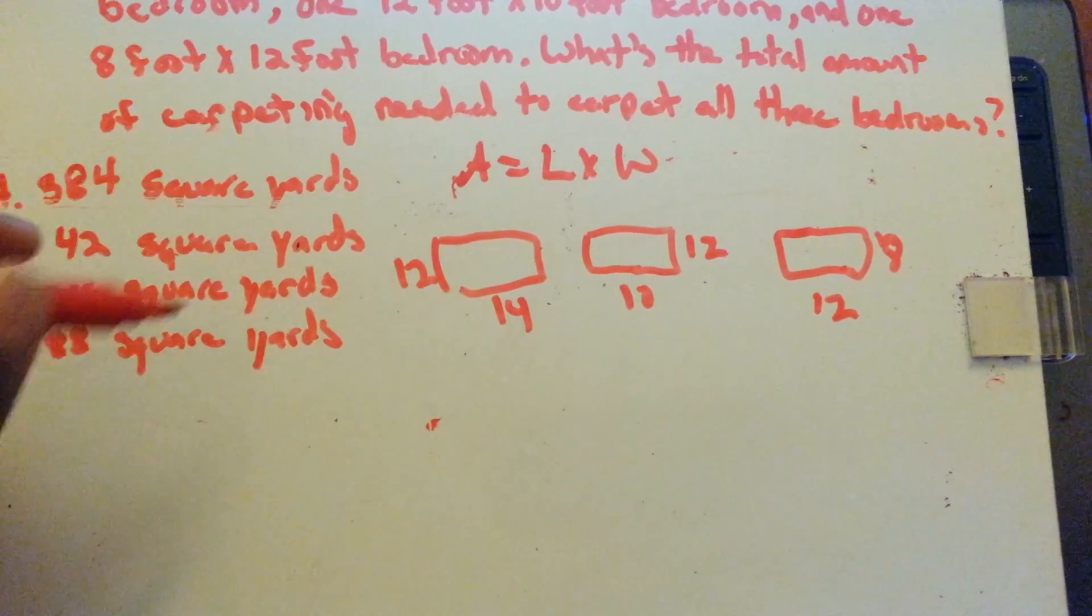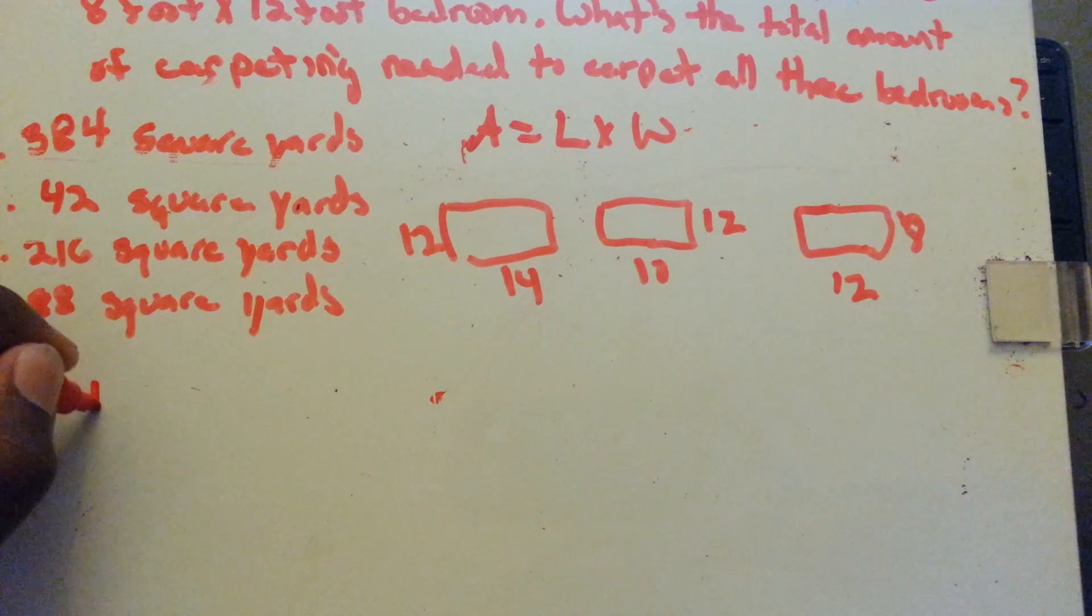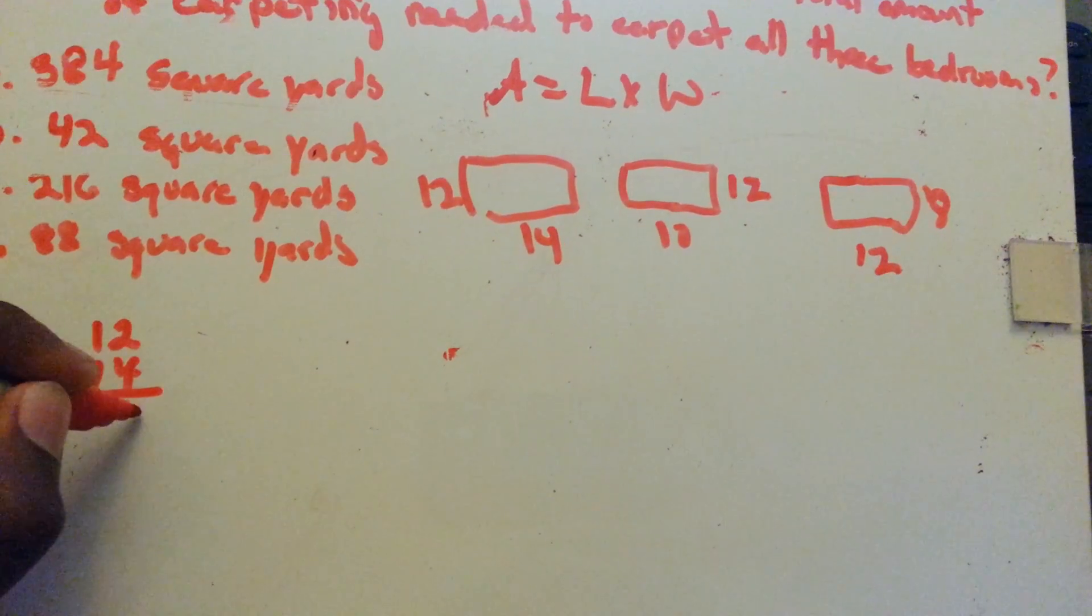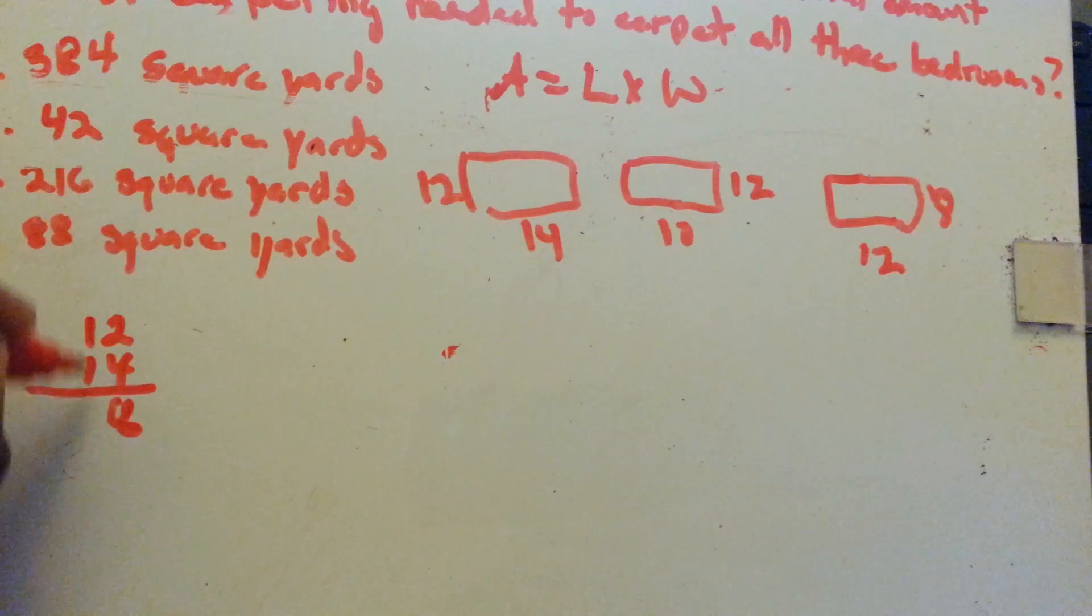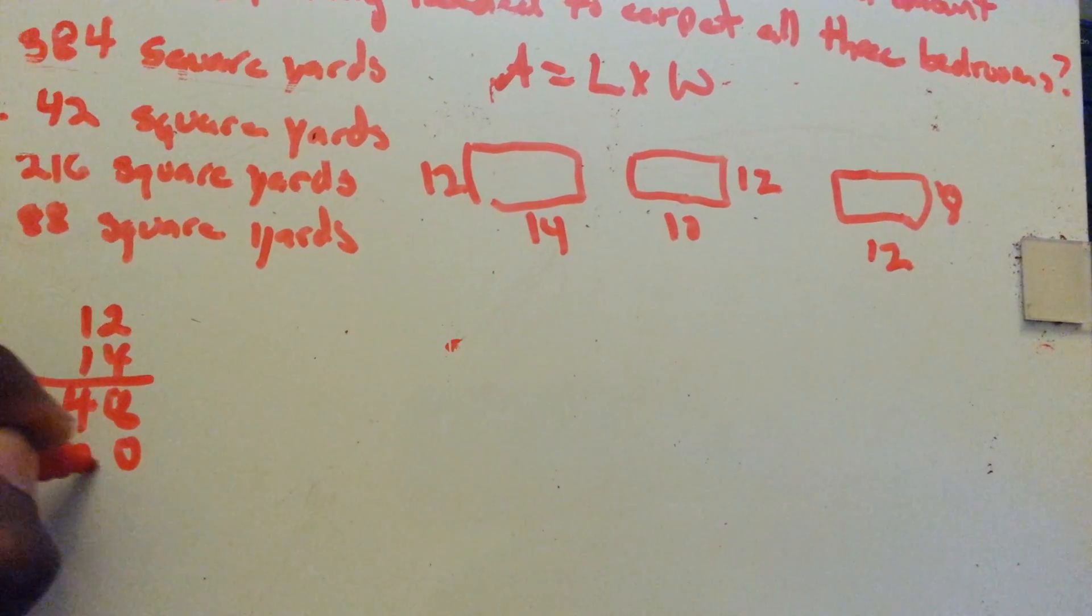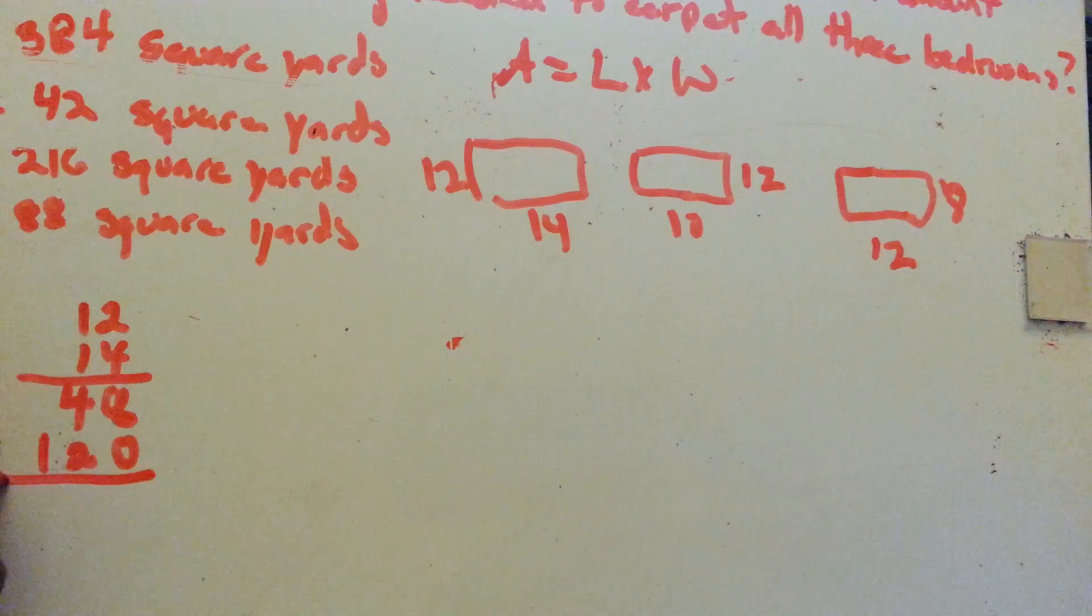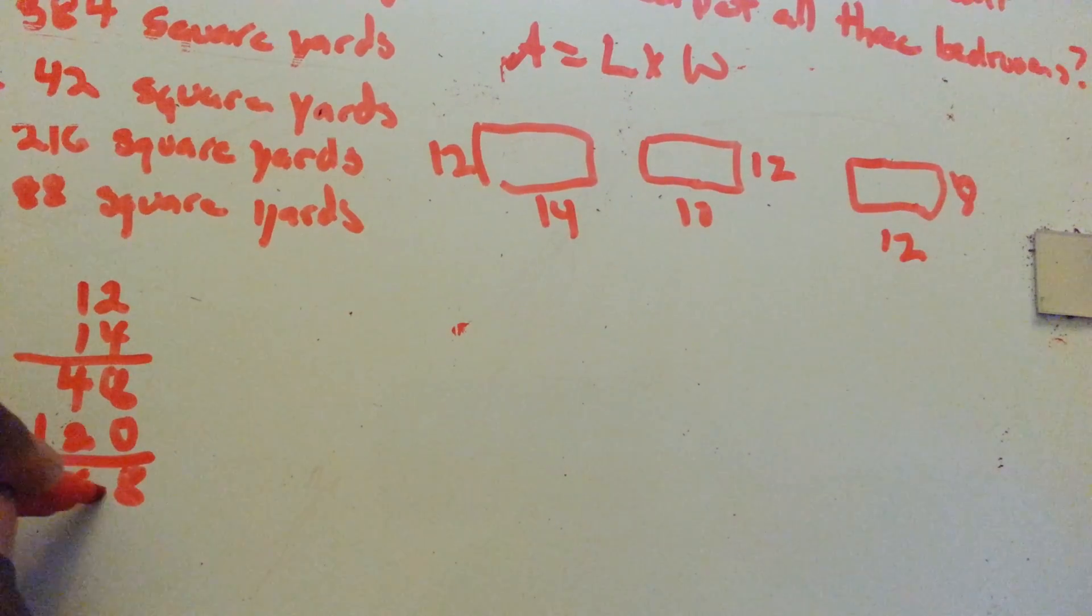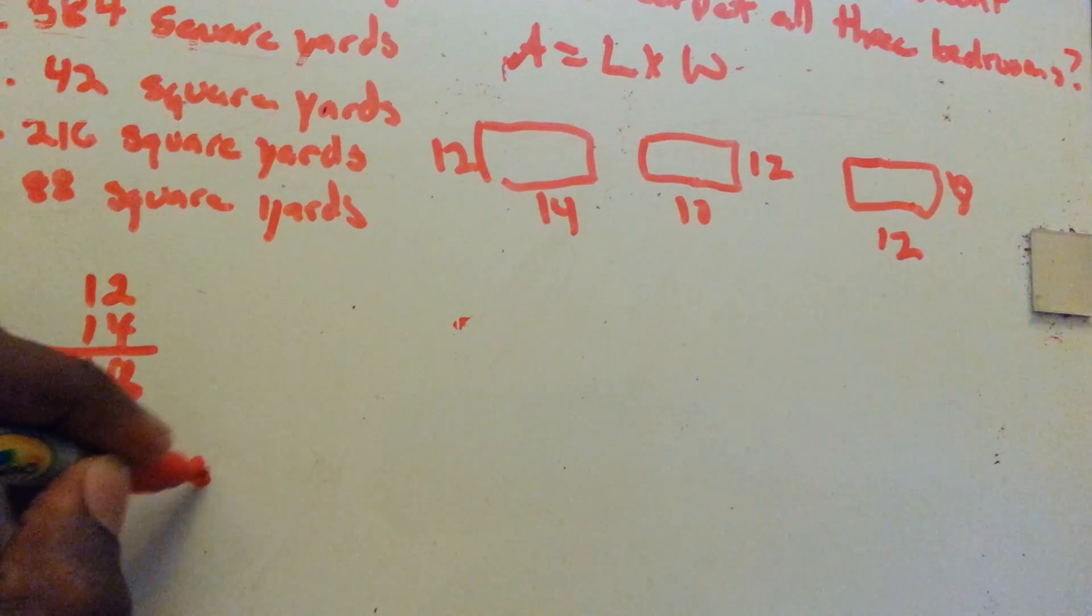To find the first room, just multiply the two sides. 12 times 14: 4 times 2 is 8, 4 times 1 is 4, bring down the 0, 1 times 2 is 2, 1 times 1 is 1. That's 168 square feet.